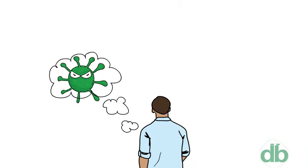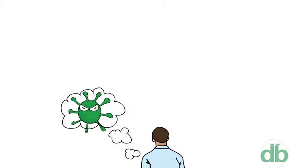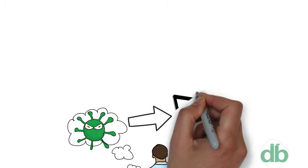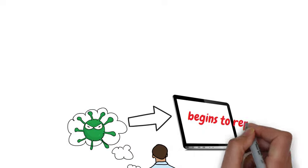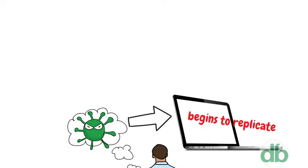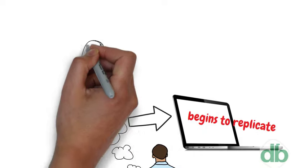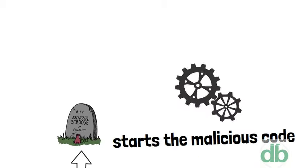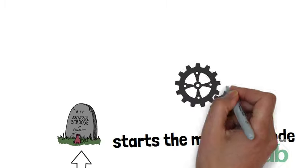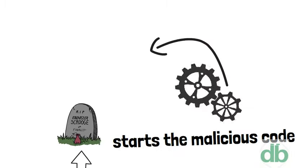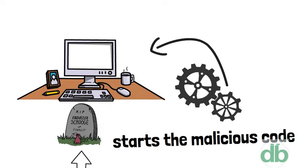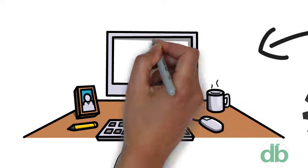A computer virus operates in two ways. The first: as soon as it lands on a new computer, it begins to replicate. The second type plays dead until a trigger kick-starts the malicious code. In other words, the infected program needs to run to be executed. Therefore, it is highly significant to stay shielded by installing a robust antivirus program.